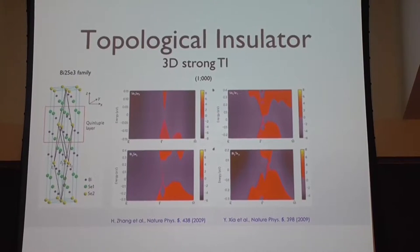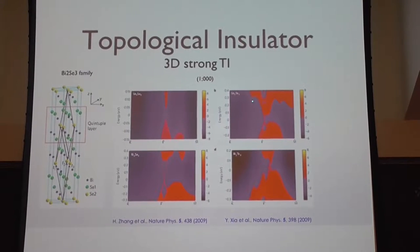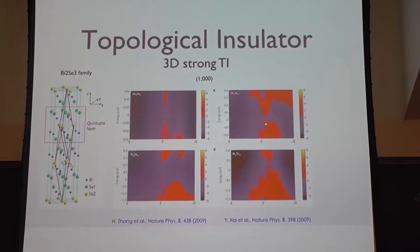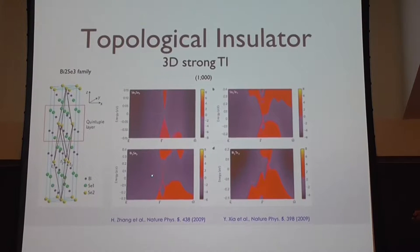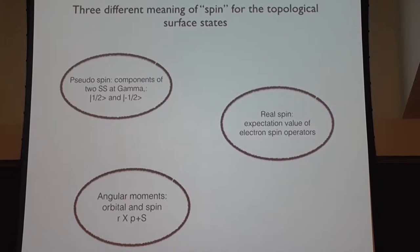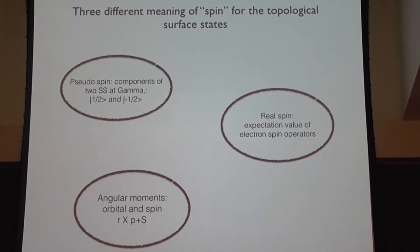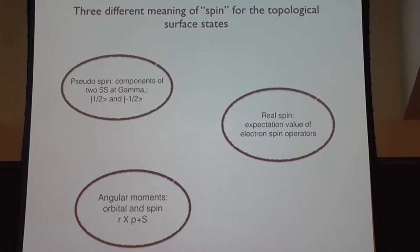This is a very typical topological insulator band structure. For topologically non-trivial insulators, you will see very good linearly dispersing Dirac cones on the surface. People are talking about spin-momentum locking for these surface states, and there are three possible meanings of this spin-momentum locking.